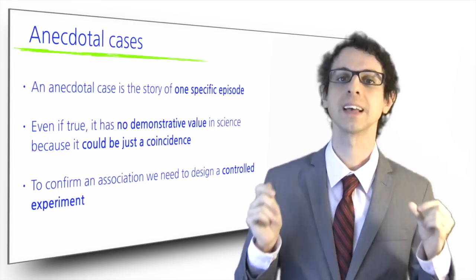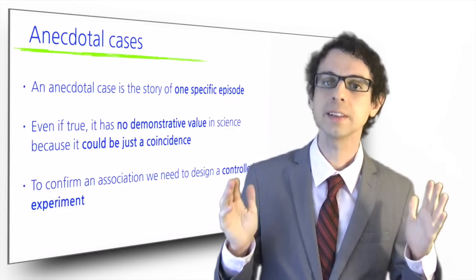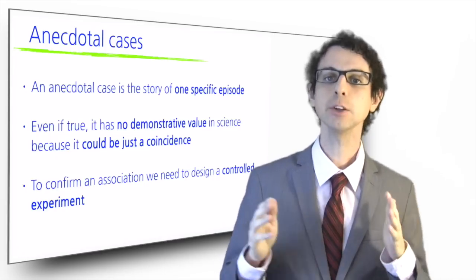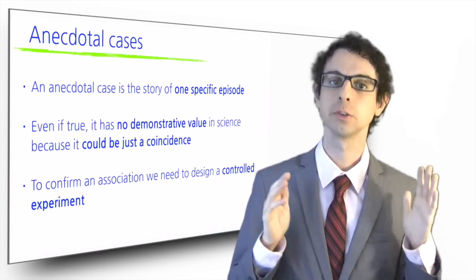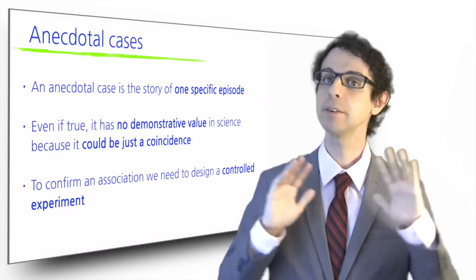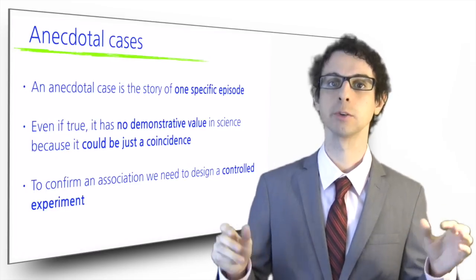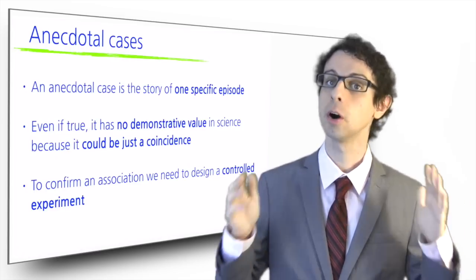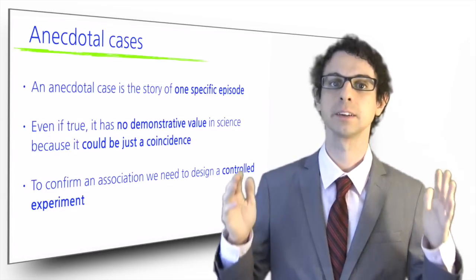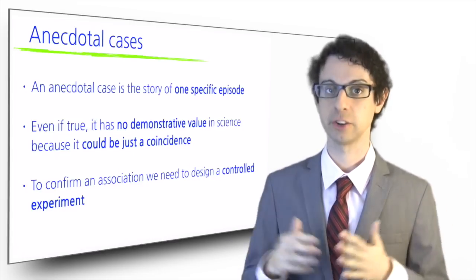The tool that scientists have to answer this question is a controlled experiment. We could select 20 patients just like Mr. So-and-so, and then randomly assign half of them to follow the purple cucumber diet, and the other half to follow a regular diet, everything else being the same. If patients on the purple cucumber diet group get better significantly more, or significantly faster than patients following the regular diet, then we can say that there is an association between the purple cucumber diet and the patients recovered.